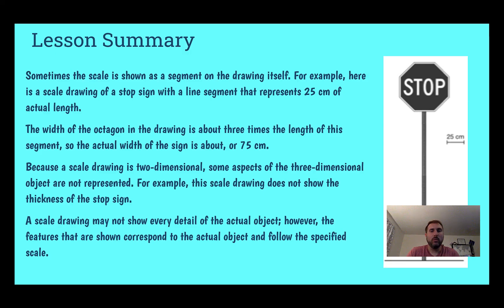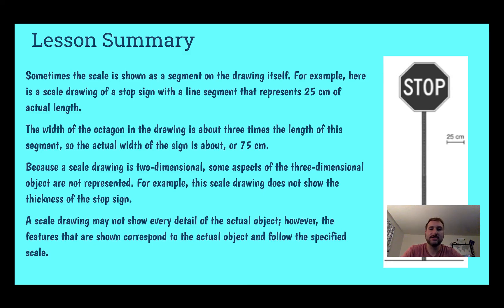One thing to note: because scale drawings are two-dimensional, they're flat. You can't see everything by just looking at one view. For example, this stop sign does not show how thick it is. We could look at it from a different view and then we'd be able to tell, but from one drawing we can't. This is why, if you investigate drawings of buildings, they have many different views so you can see all the different aspects of what's happening.